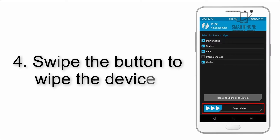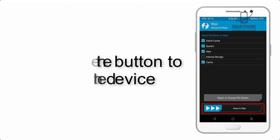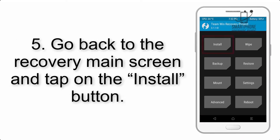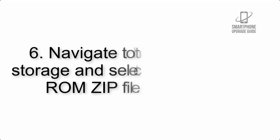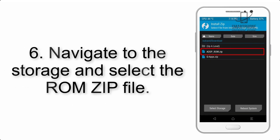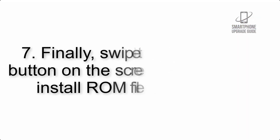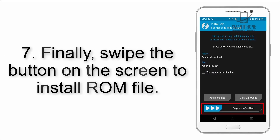Step 4: Swipe the button to wipe the device. Step 5: Go back to the recovery main screen and tap on the Install button. Step 6: Navigate to the storage and select the ROM zip file.